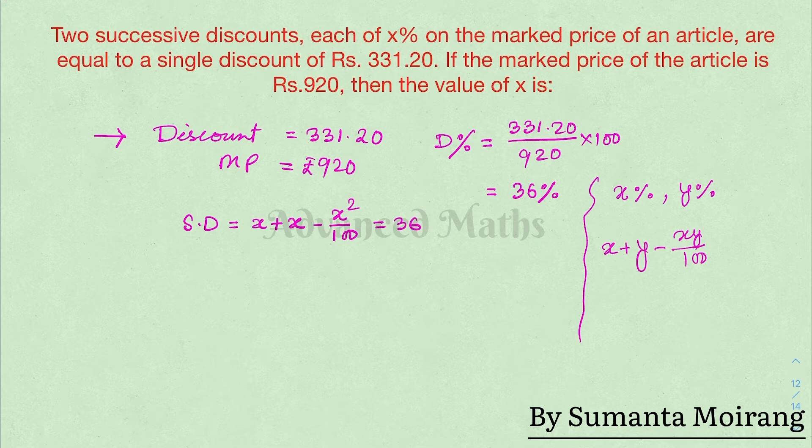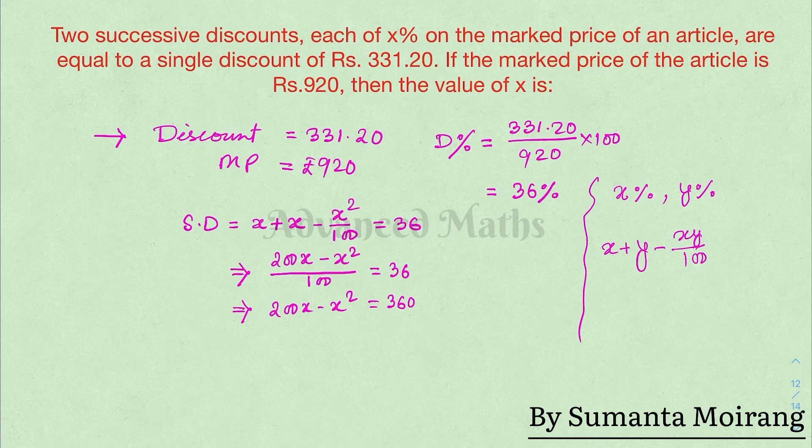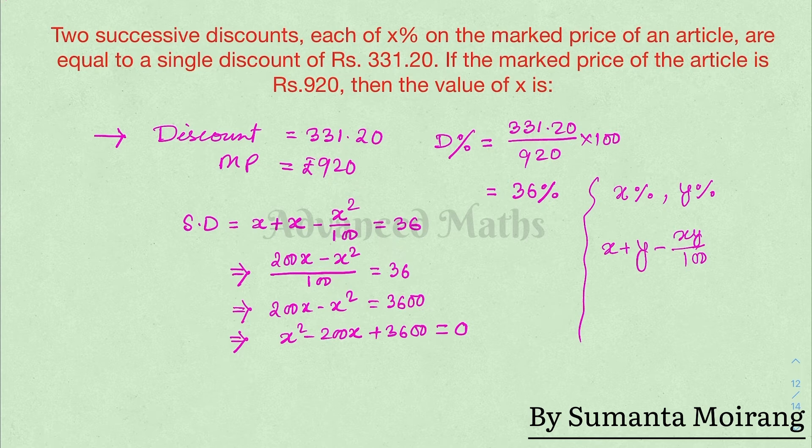This implies 2x minus x squared by 100 equals 36. Taking LCM gives 200x minus x squared equals 3600. This simplifies to x squared minus 200x plus 3600 equals 0.